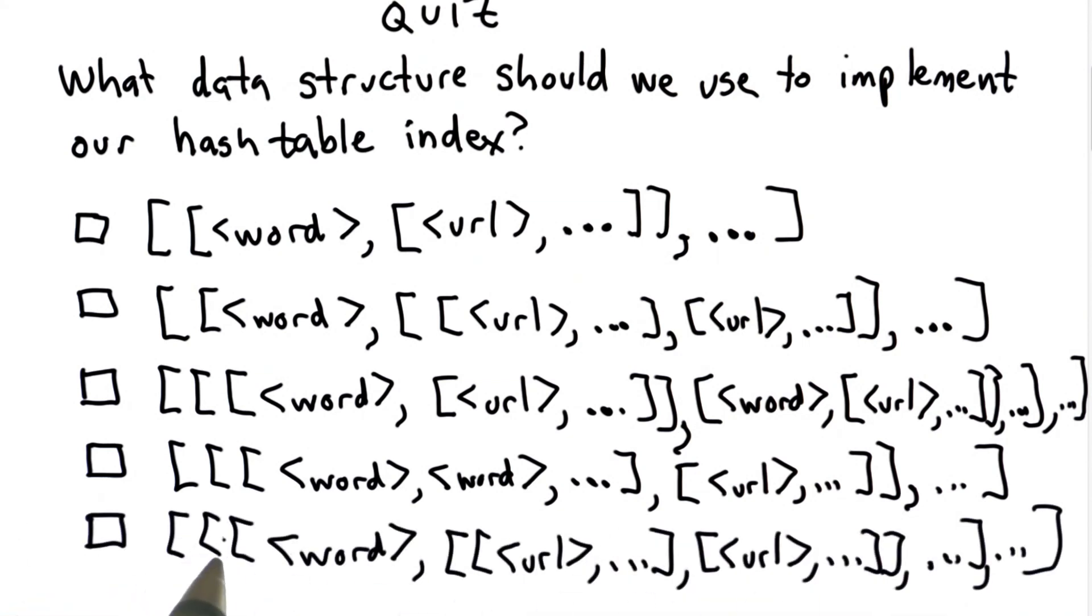And for the final choice, we also have three nested lists where each element list is a list, where the elements of that list are lists that are a word followed by a list where each element in that list is a list of URLs. So which one of these would be the best structure to use to implement a hash table?